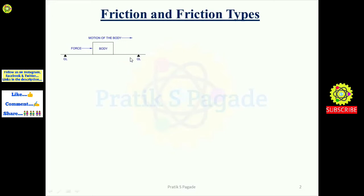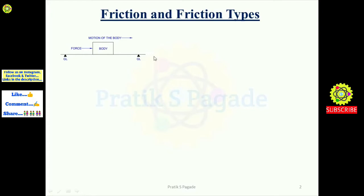Here, suppose this straight line we will consider as a rough surface, and on this rough surface there is a stationary body. When we apply a force in the rightward direction, the body will move to the right. Due to the roughness of the surface, the surface will apply an opposite force on this body in the left direction, which will retard the motion of the body — that is, reduce its velocity in the rightward direction.